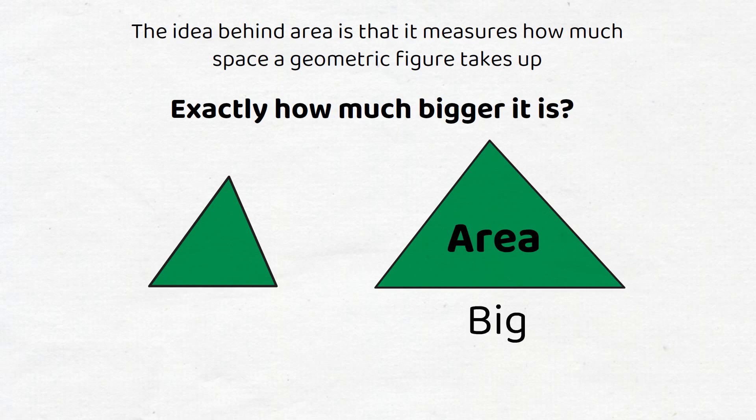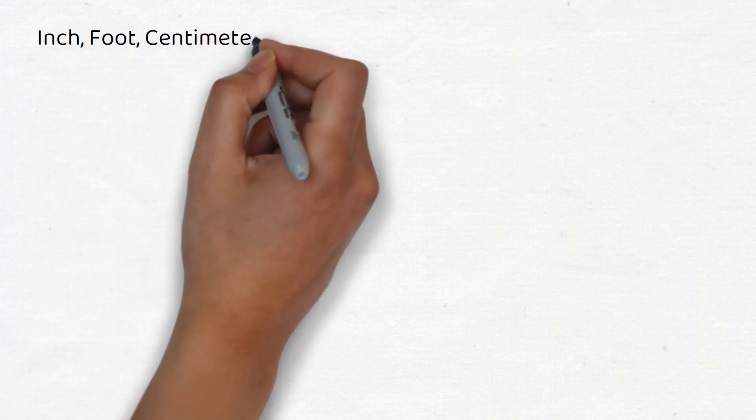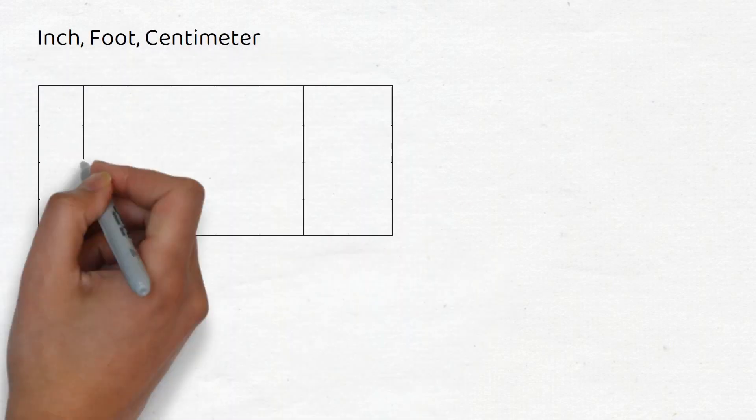The way area is measured is by starting with some unit length, be it a foot, centimeter, inch, etc. Then we construct a square that's one unit across and one unit tall. We then count the total number of such squares that are contained in a geometrical figure.